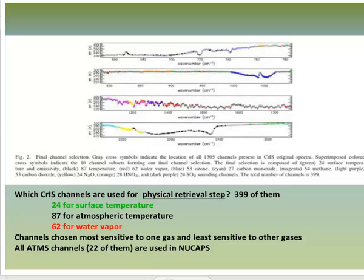The first guess for this is climatology. Think about what that means if you are in a regime that deviates significantly from normal. There are 24 channels highlighted in green from which surface temperature is retrieved, 62 highlighted in red from which water vapor is retrieved. The channels selected are most sensitive to one gas while being less sensitive to other gases — that is, they have high, but not perfect, spectral purity.